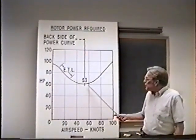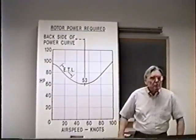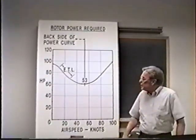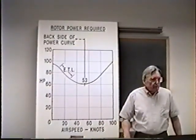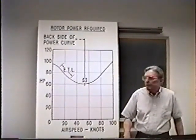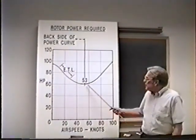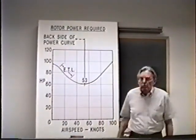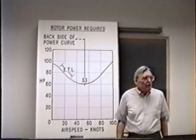It also will tend to determine our best rate of climb speed. Because we're using the least amount of power for level flight, we have the greatest amount of power left over to climb with. And it will tend to be at or very close to our speed for a minimum rate of descent in auto rotation.